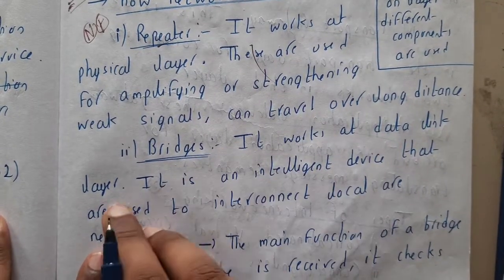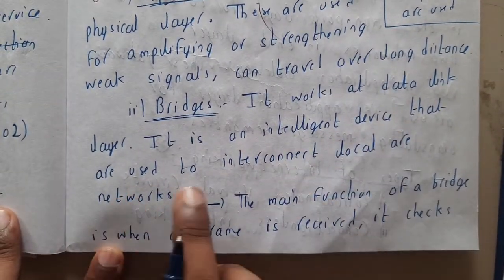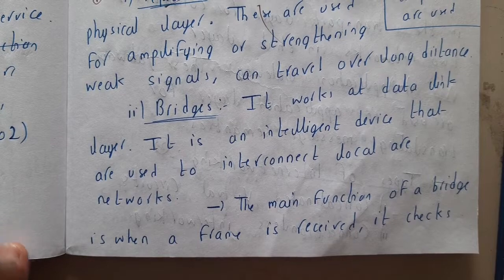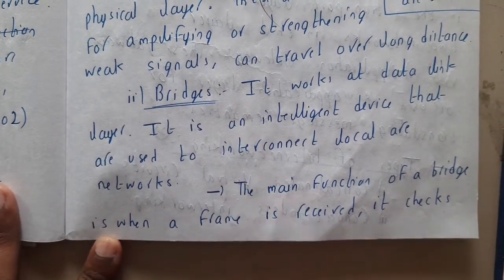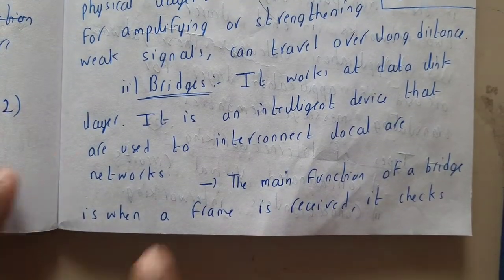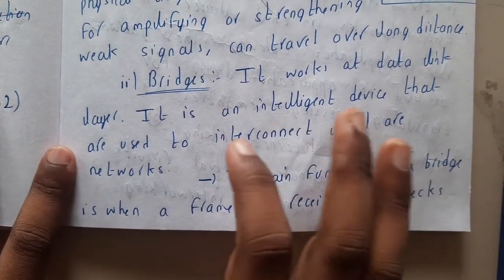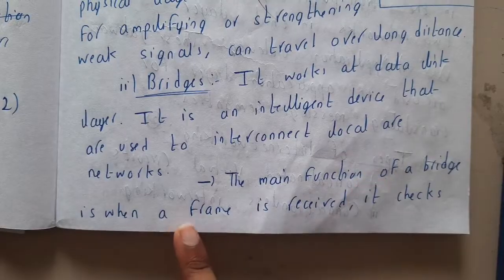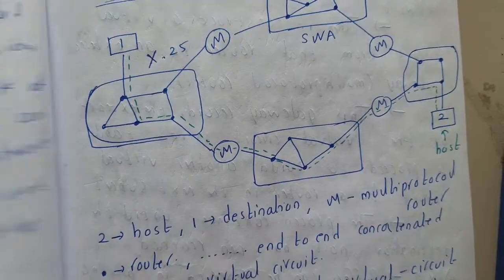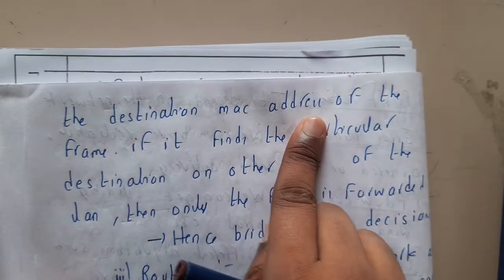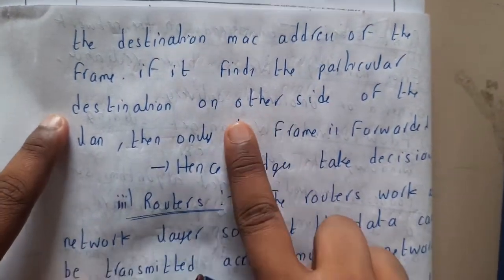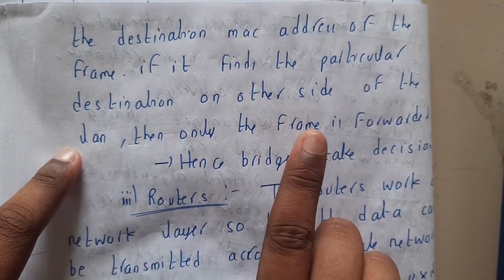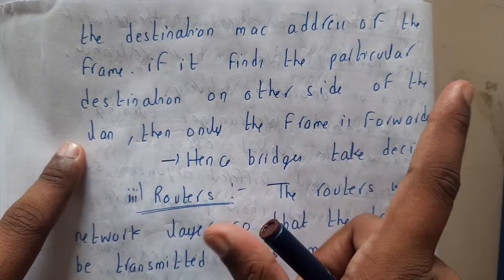Bridges are used in the data link layer — the second layer. They are intelligent devices used to interconnect local area networks. In the data link layer we discussed MAC addresses, and bridges work with MAC addresses. When a frame is received, the bridge checks the destination MAC address, and only if it finds the destination on the other side does it forward the frame.